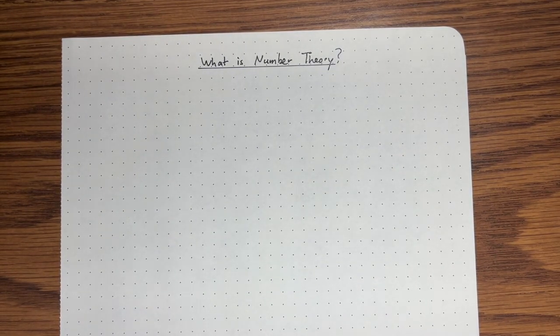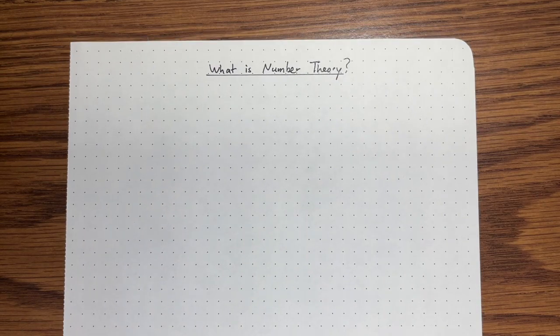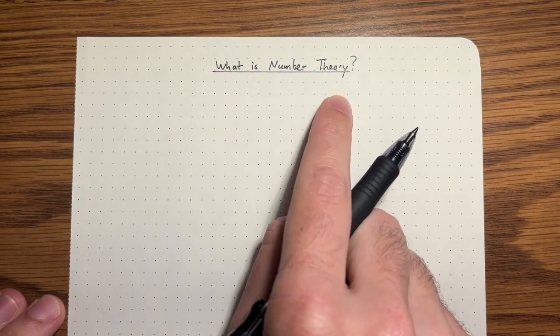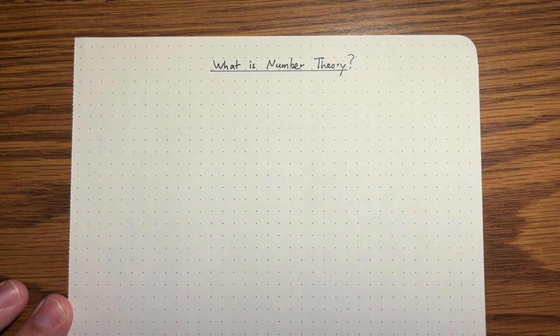Welcome. My name is Thomas Carr and I'm a graduate student at University of Washington. This is going to be an introductory course to number theory.